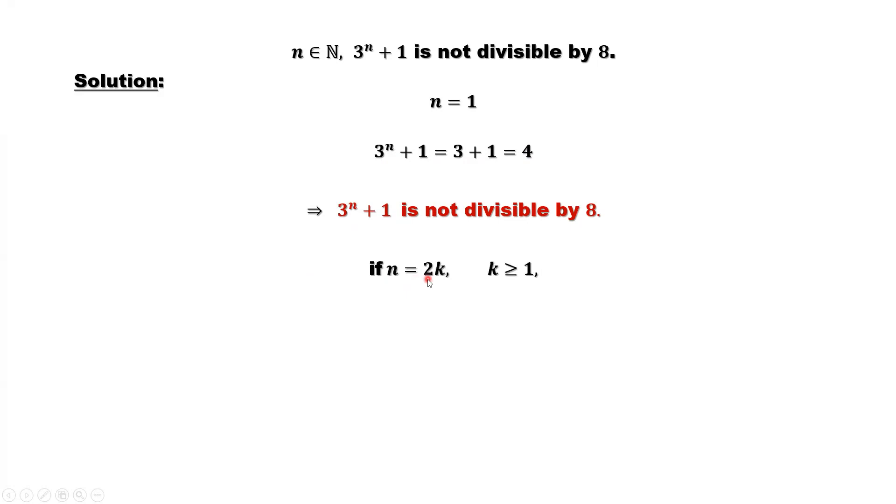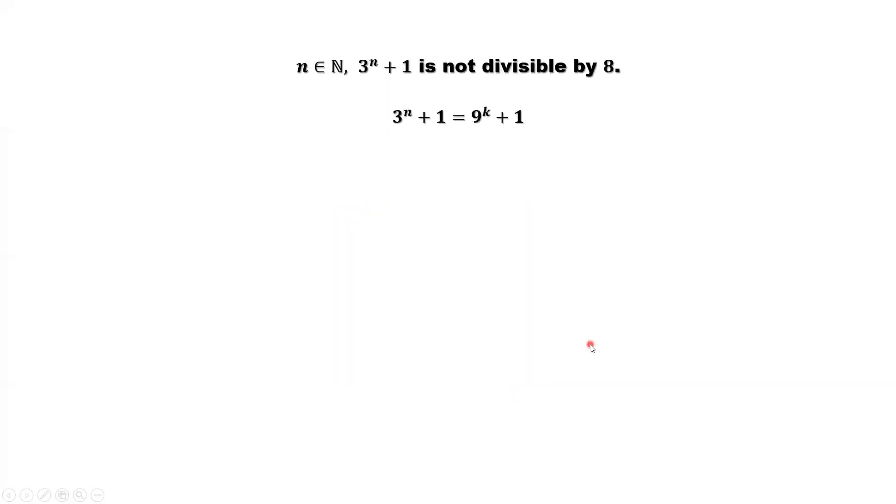If n is an even number, k here must be bigger than or equal to 1. 3 to the power of n, we can rewrite as 3 to the power of 2k, because n equals 2k. Put 3 to the power of 2k into this term: 3 squared, then to the power of k. 3 squared is 9. So we have 3 to the power of n plus 1 equals 9 to the power of k plus 1.